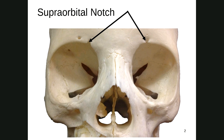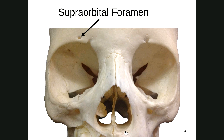Here you can see the supraorbital notch — it's not a complete hole. But over here, that's a foramen — a complete hole. That's the supraorbital foramen. Please don't get them confused on a test: if it's a complete hole, that's a foramen; if it looks like a nick out of the bone, that's a notch.